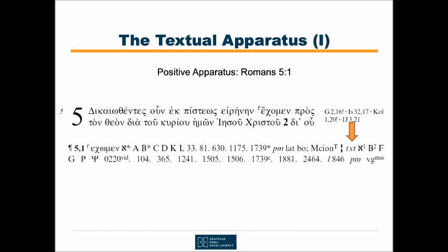There is one alternative reading, which reads echōmen with omega instead of echomen with omicron. The two words differ regarding the mood: whereas echomen is indicative, echōmen is subjunctive. In case the indicative form is original, Paul states that we have peace with God. In case we have to read the subjunctive, Paul exhorts us to have peace with God — let us have peace with God. A good example for a minimal difference in wording with a remarkable impact in meaning.